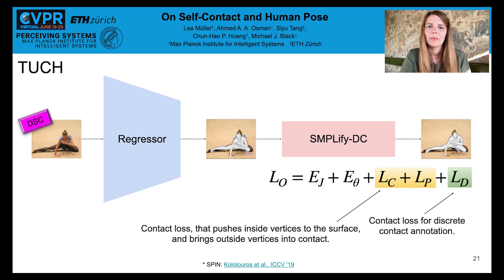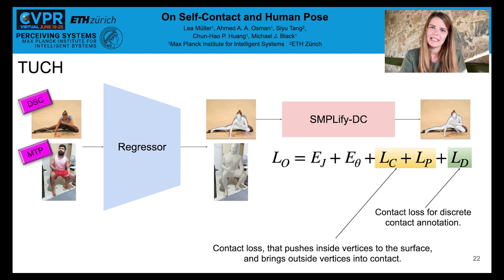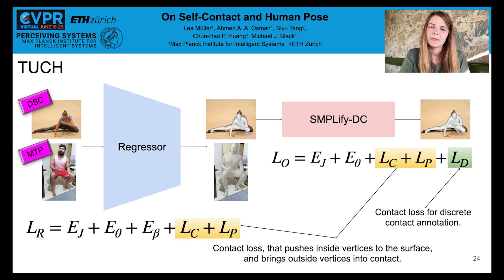In LD, we take the discrete contact annotations into account. So in the example of this gymnastics pose, it encourages the bottom and the left foot to be in contact. We use 50% DSC and 50% MTP data per batch. In contrast to DSC data, MTP data is accurate enough and must not be optimized. The touch training loss includes reprojection, pose and shape losses, as well as LC and LP, the pushing and pulling terms.